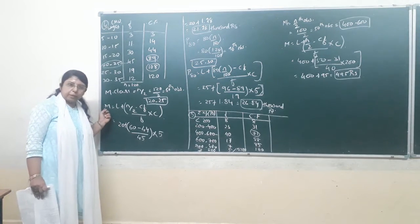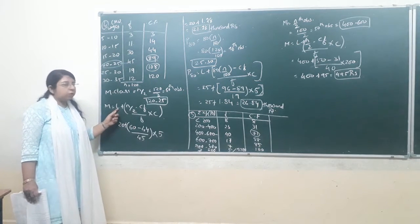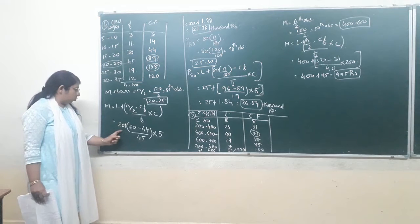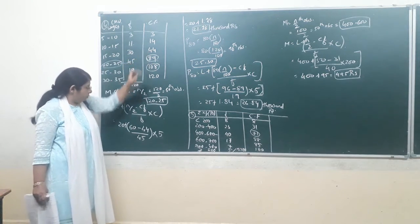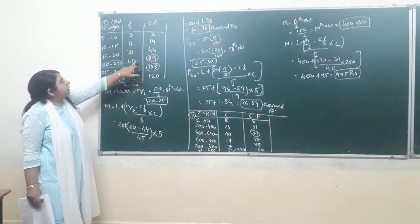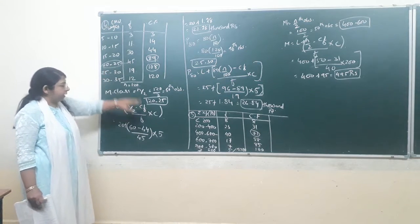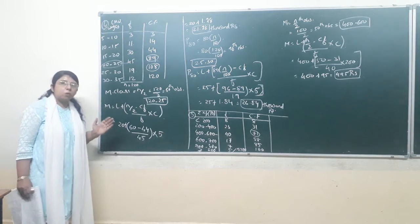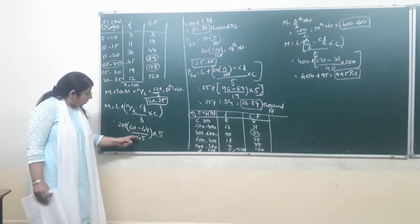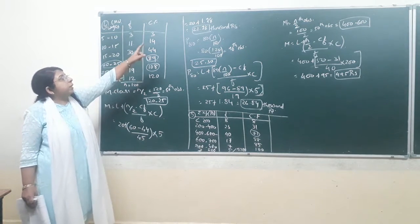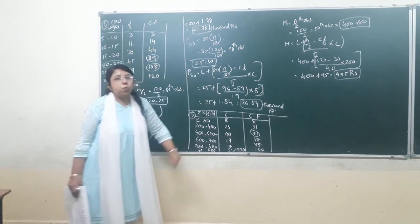Now we apply the median formula: Median = L + (n/2 − CF) / F × C. The lower boundary L of the median class 20–25 is 20. n/2 = 60. CF of the previous class is 44. F (frequency of the median class) is 45. C (class length) is 5. So: 20 + (60−44)/45 × 5 = 20 + 16/45 × 5 = 20 + 1.78 = 21.78 thousand rupees.